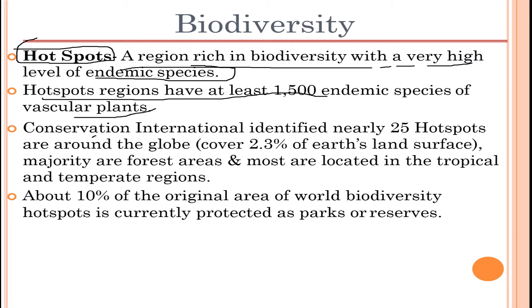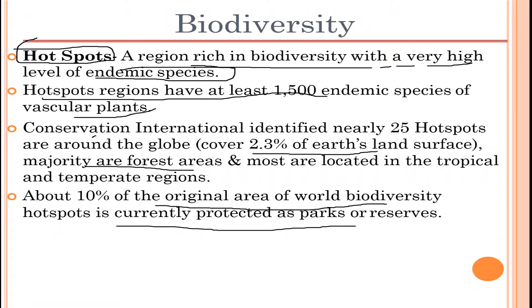Conservation International identified nearly 25 hotspots around the globe, covering around 2.3% of Earth's surface — a significant percentage. The majority are forest areas, most located in tropical and temperate regions. About 10% of the original area of the world's diversity hotspots is currently protected as parks or reserves, which are hotspots because of the variety of species, animals, insects, and organisms found there.